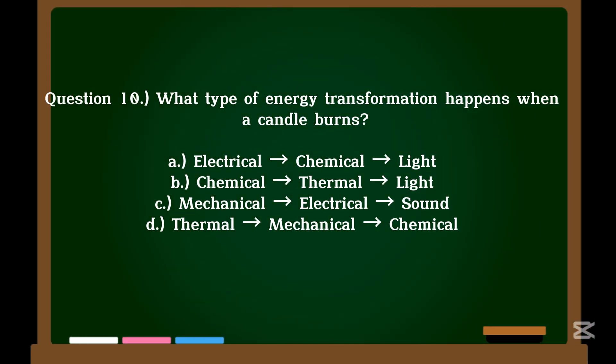Question 10. What type of energy transformation happens when a candle burns? A. Electrical → chemical → light. B. Chemical → thermal → light. C. Mechanical → electrical. D. Thermal → mechanical.